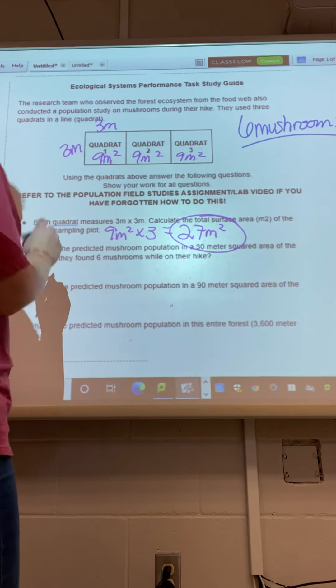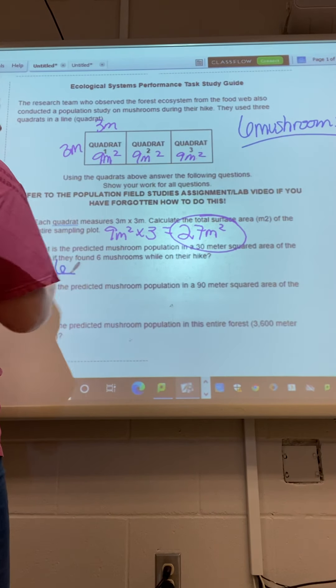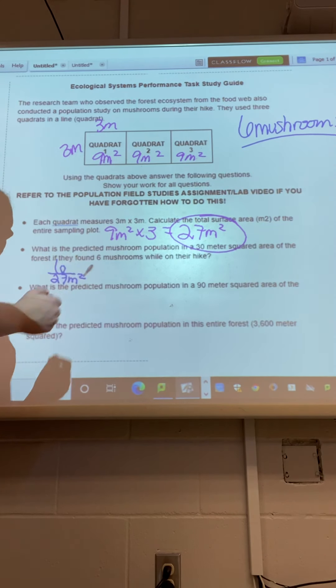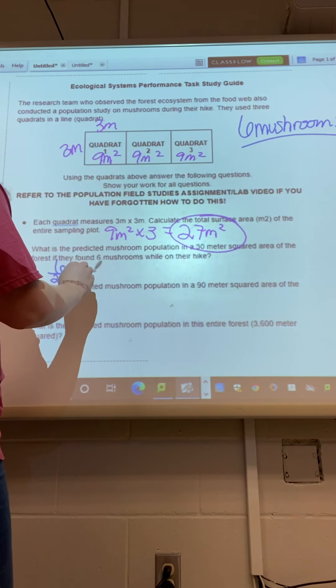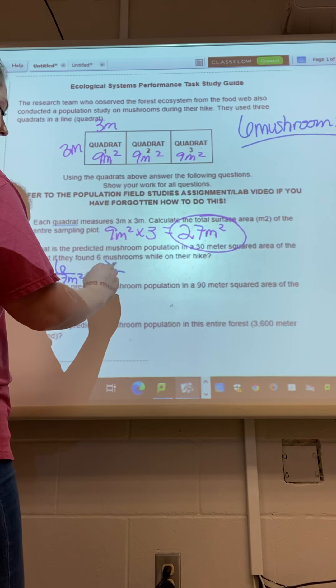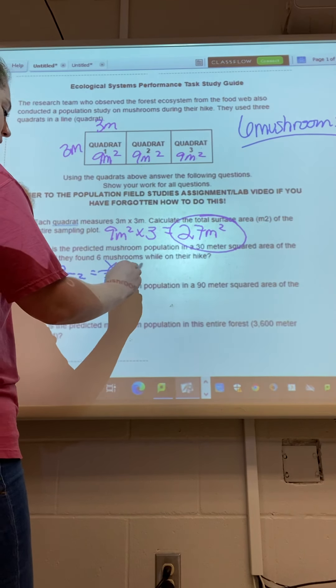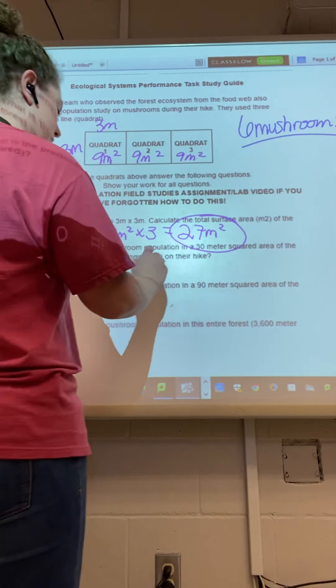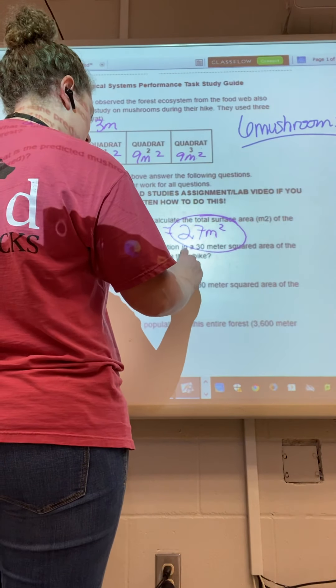So if they found six mushrooms in a 27 meter squared area, then how many would they get in a 30 meter squared area? So remember we just cross multiply. So we're going to have 27x equals...